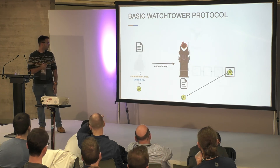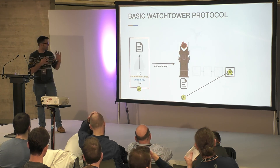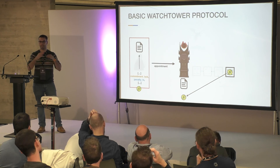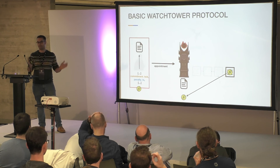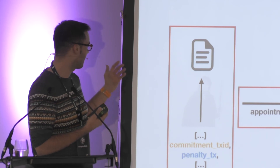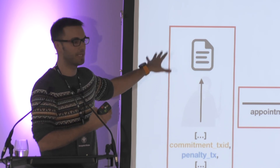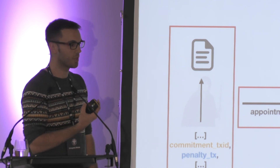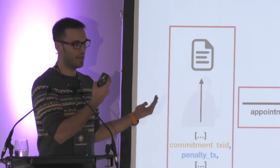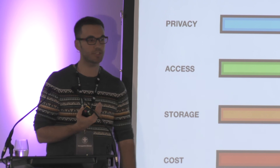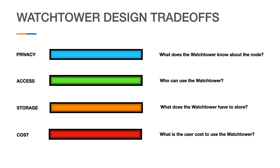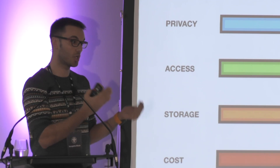We're going to pay attention to four things: first, how the commitment transaction and penalty transaction are constructed into the appointment — by the way, I hate the name 'appointment', it's the only one I've come up with, if you have a better suggestion let me know. Second, how this data is sent to the watcher and what protocol is used. Third, who can use the tower — whether it's public or private. Fourth, how the watch tower stores information and finally how the tower is paid. This translates to four key properties: privacy, access, storage, and cost.